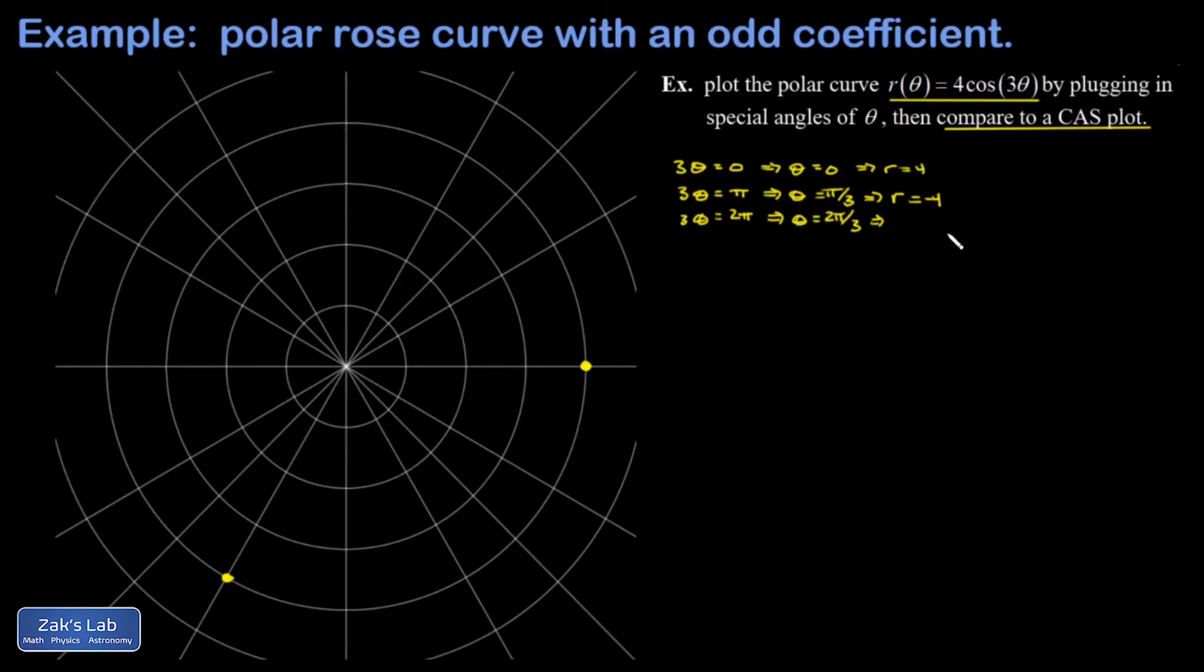And r is going to be four times the cosine of 2π, in other words four. So when I aim in the direction of 2π/3, I go four units from the origin. Now once you get used to graphing rose curves, this is all you really need to do before you realize what the entire shape of the curve is going to be. These actually turn out to be the tips of the petals or the leaves for the rose curve.